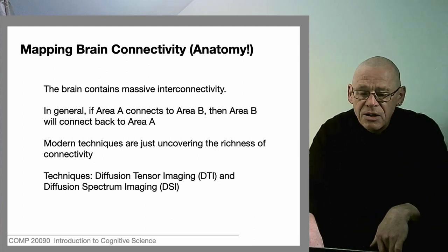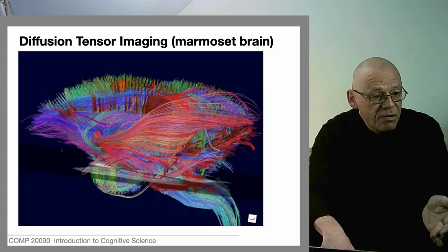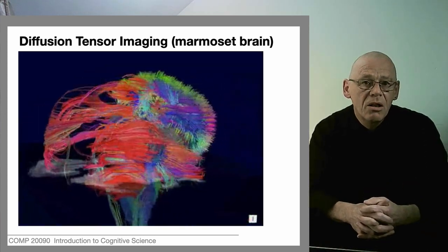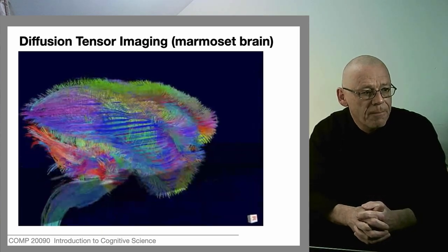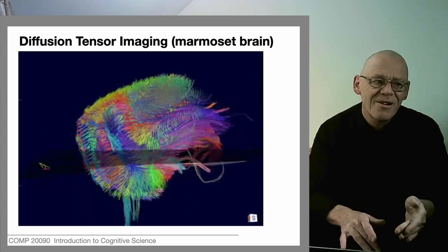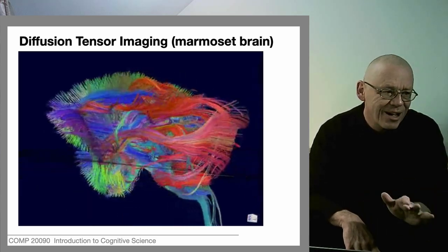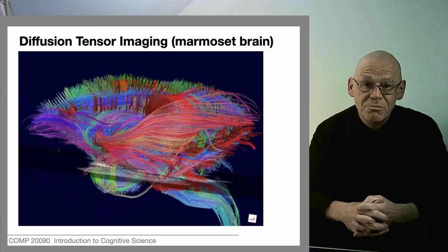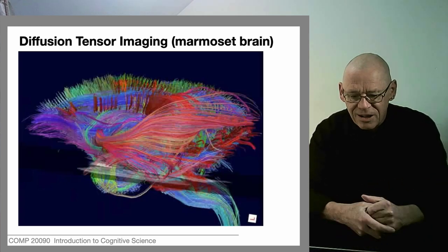This has only recently become possible and has given rise to very powerful images. Here, for example, is a marmoset brain, and you're seeing some of the long-range connections that exist in it. The colors are added by the printer for imaging purposes — the marmoset brain is not really this colorful. These colorful images have become known as 'brainbows' because they are typically represented like this.